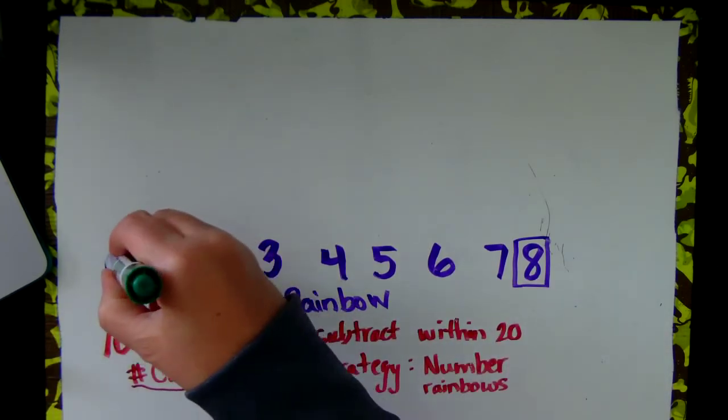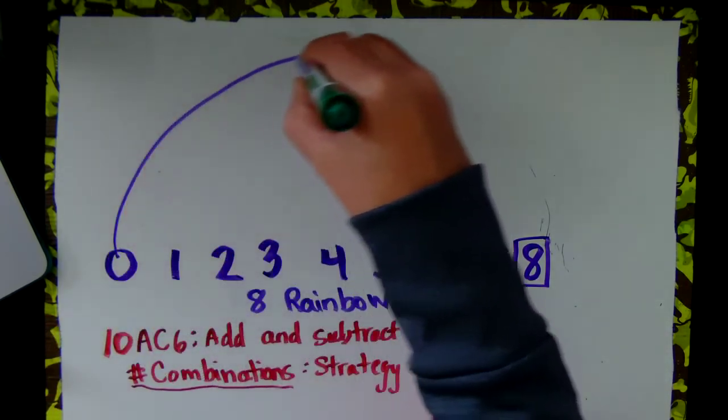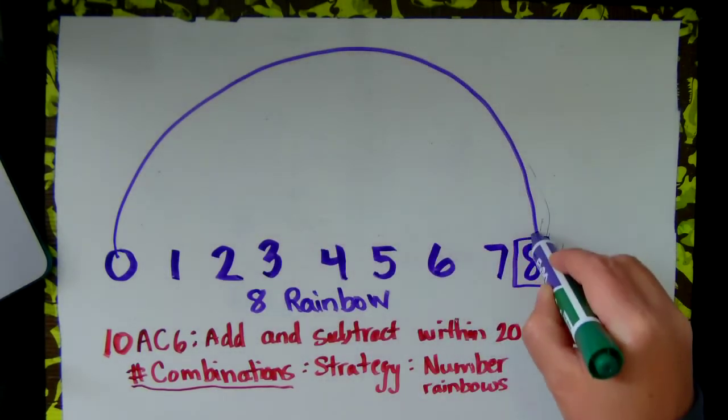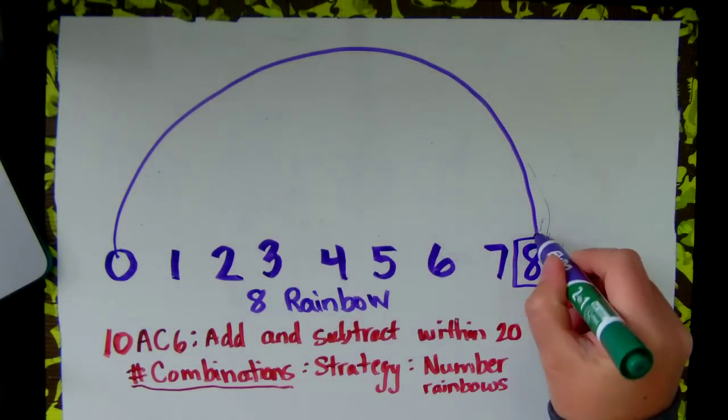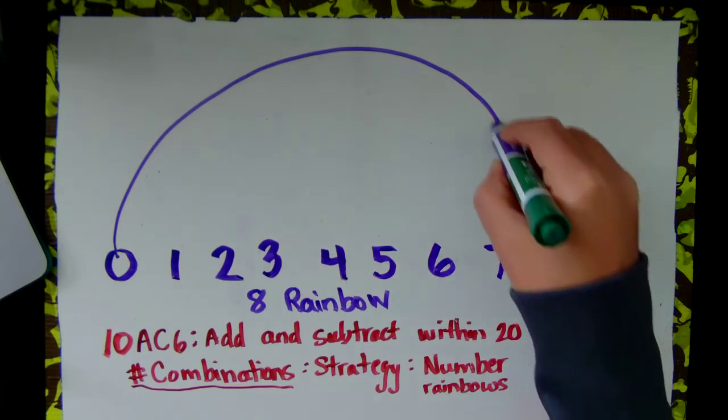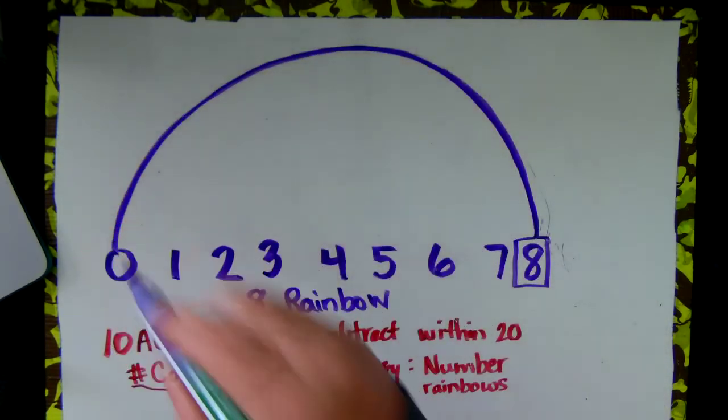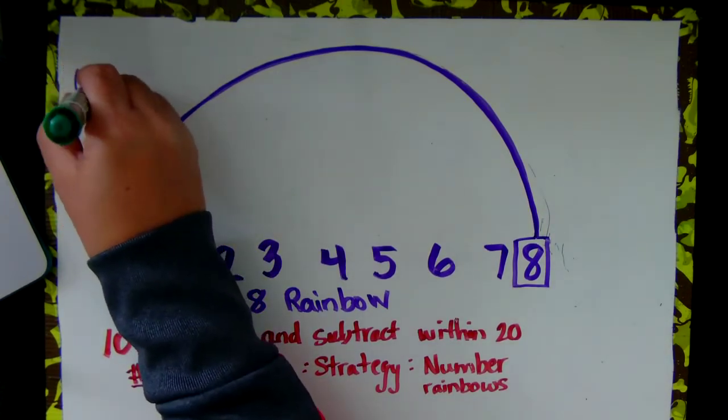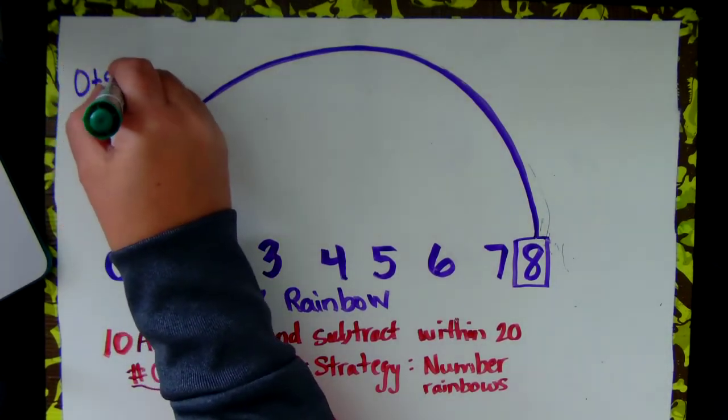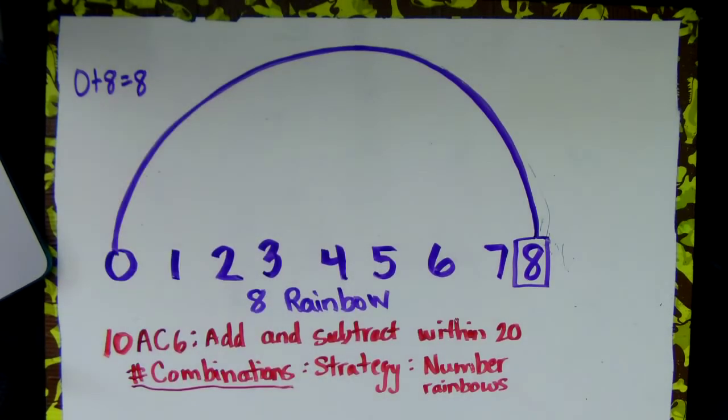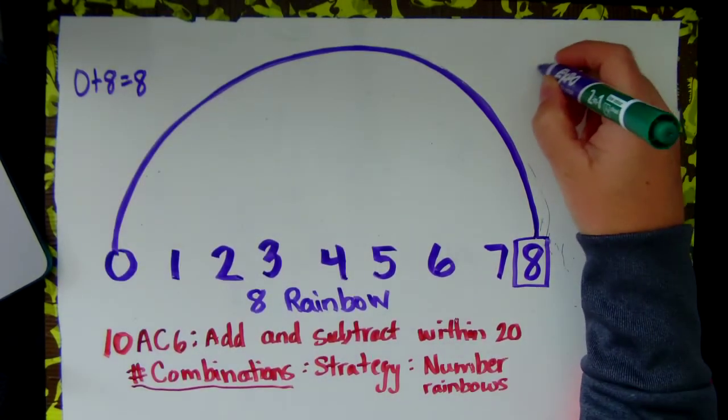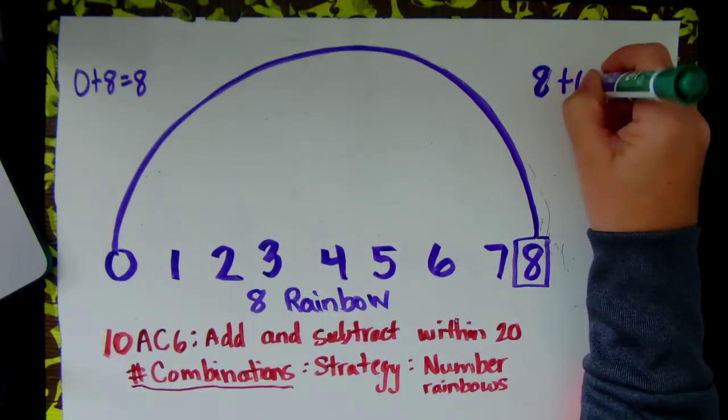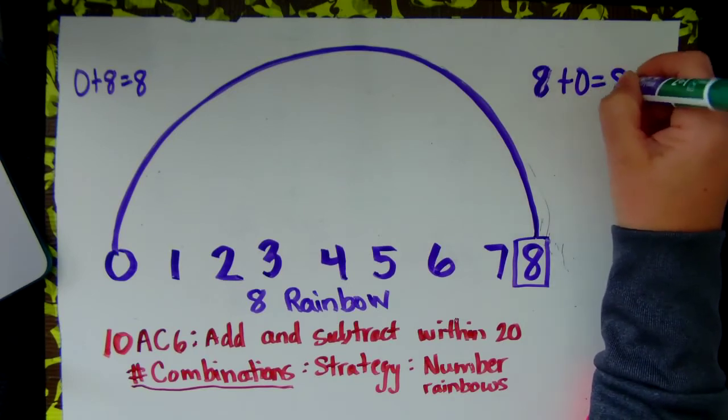We are going to connect 0 and 8 make 8, 8 and 0 make 8. Now we are going to write it, 0 plus 8 equals 8 and 8 plus 0 equals 8.